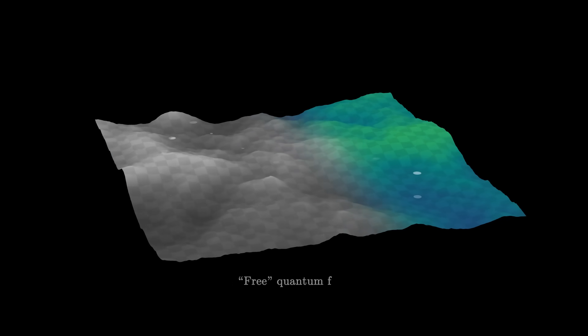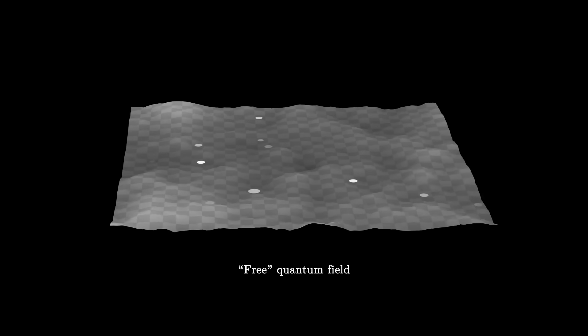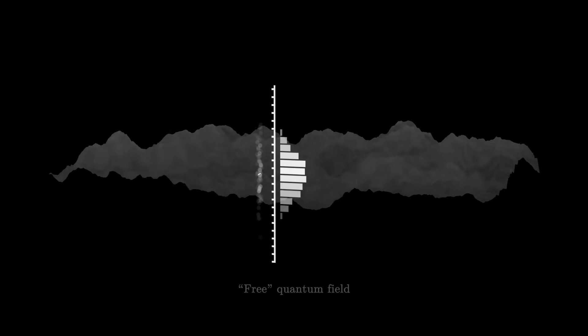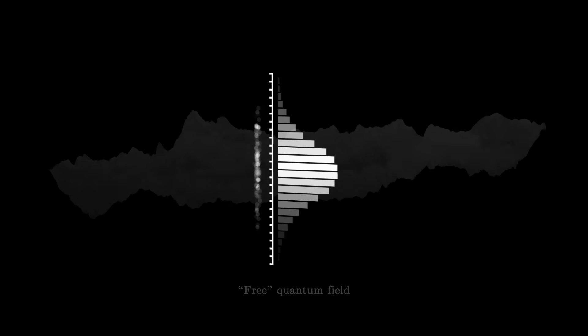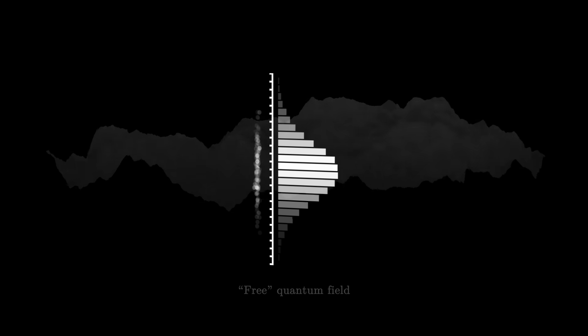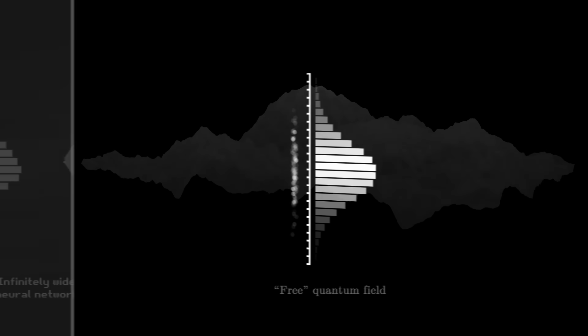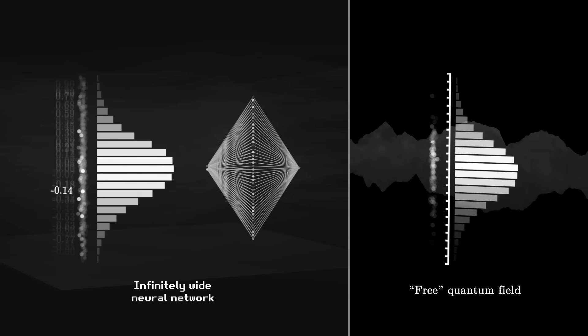In the simplest model of a quantum field, particles are independent and do not interact with each other. In this situation, the values of the field fluctuate according to a very specific distribution, a Gaussian distribution. In other words, a quantum field without interactions behaves in the same way as an infinitely wide neural network whose coefficients vary randomly.